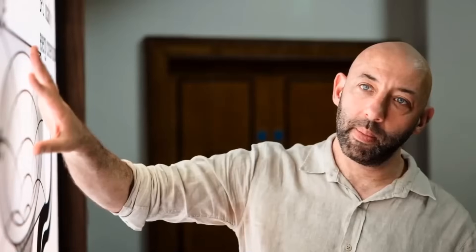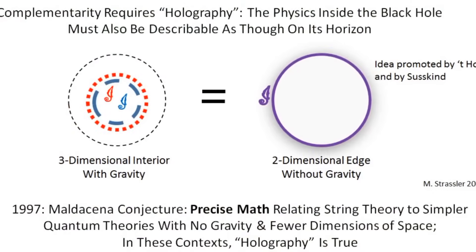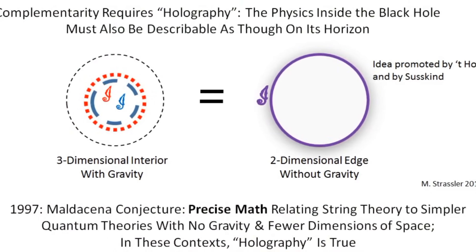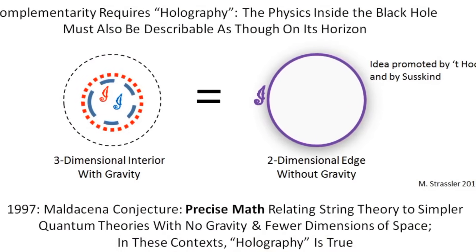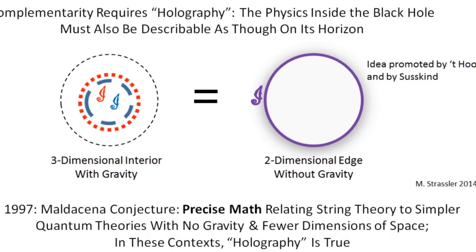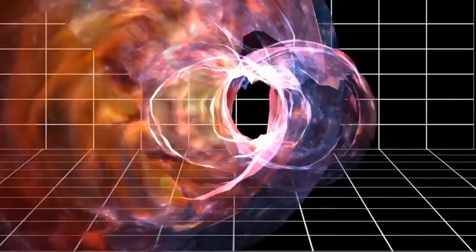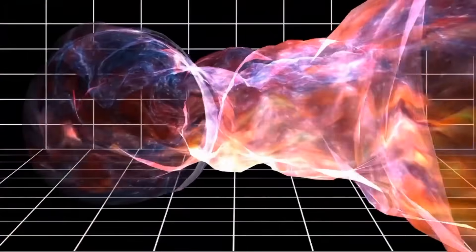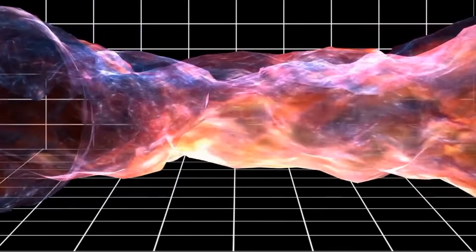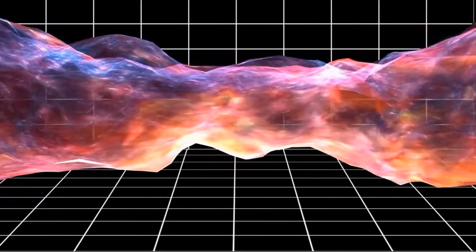One such alternative approach is exemplified by the work of physicists like Jonathan Oppenheim, who proposed departures from the assumptions of string theory. Oppenheim's research suggests a classical view of gravity, avoiding the need for quantization and addressing fundamental issues such as the black hole information paradox. These alternative approaches challenge the conventional wisdom in theoretical physics and highlight the ongoing quest for a deeper understanding of the fundamental forces governing the universe. While string theory remains a leading candidate for a unified theory of physics, the exploration of alternative frameworks underscores the richness and complexity of the quest for a theory of everything.